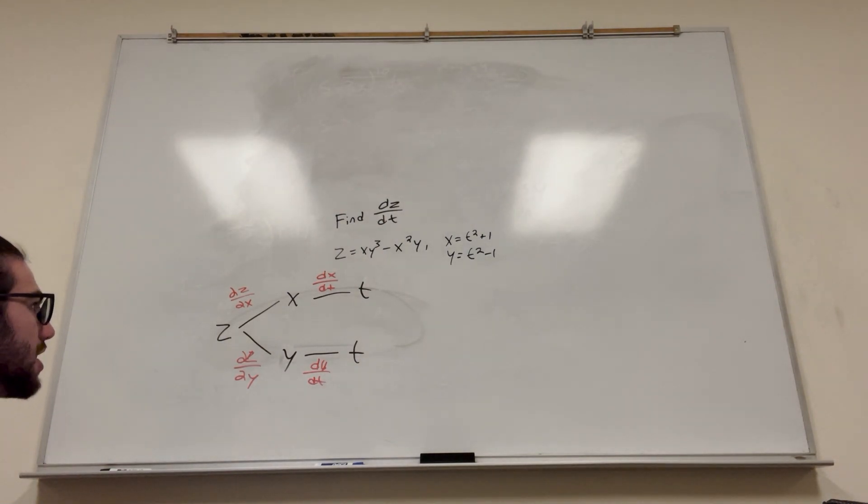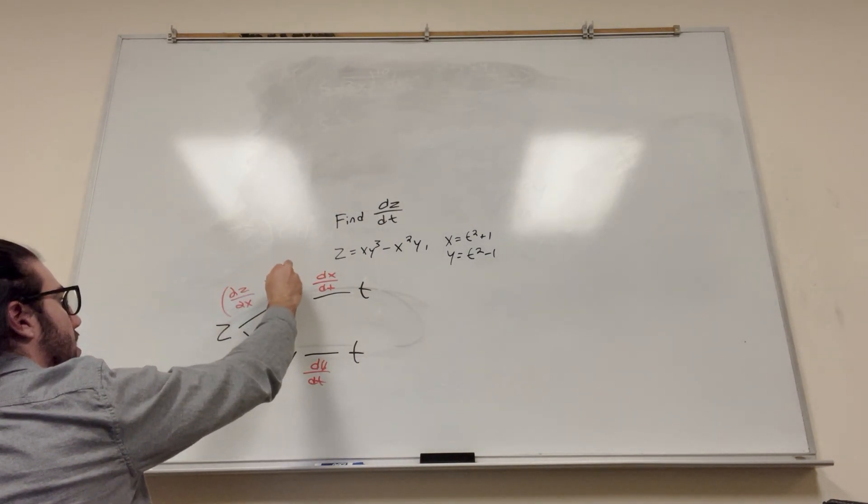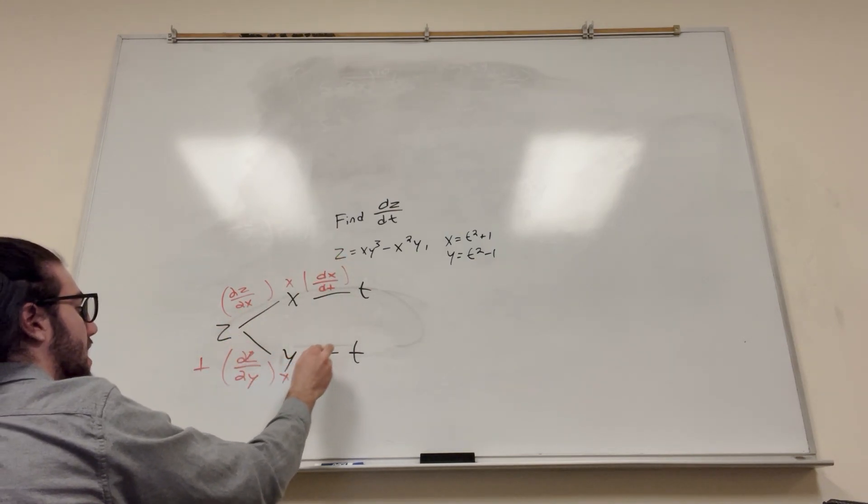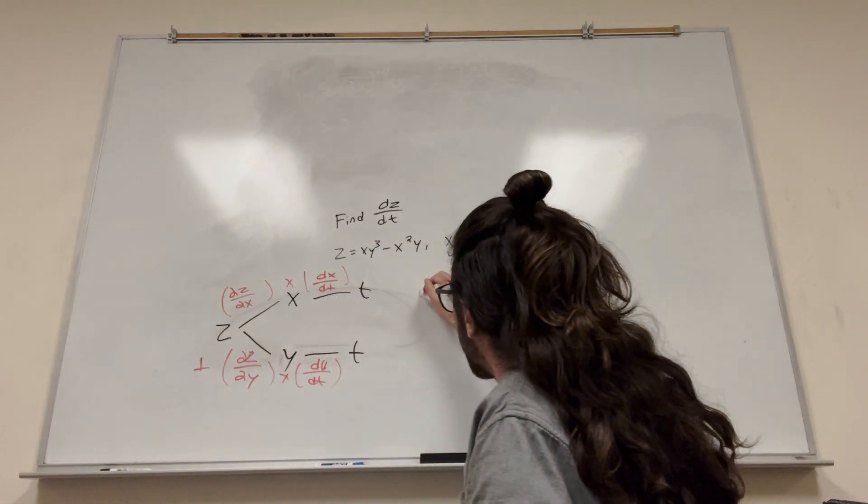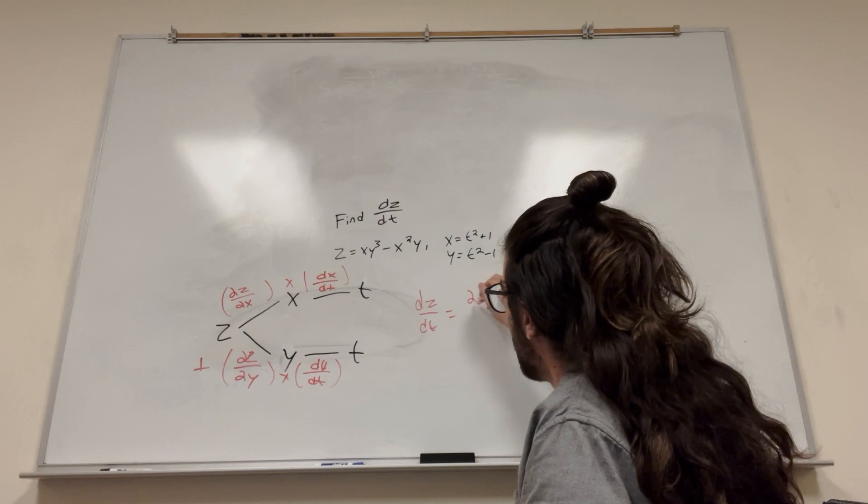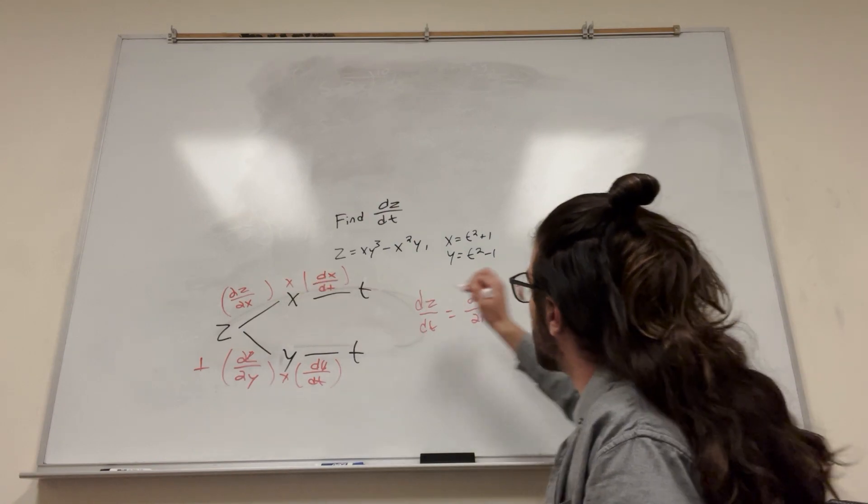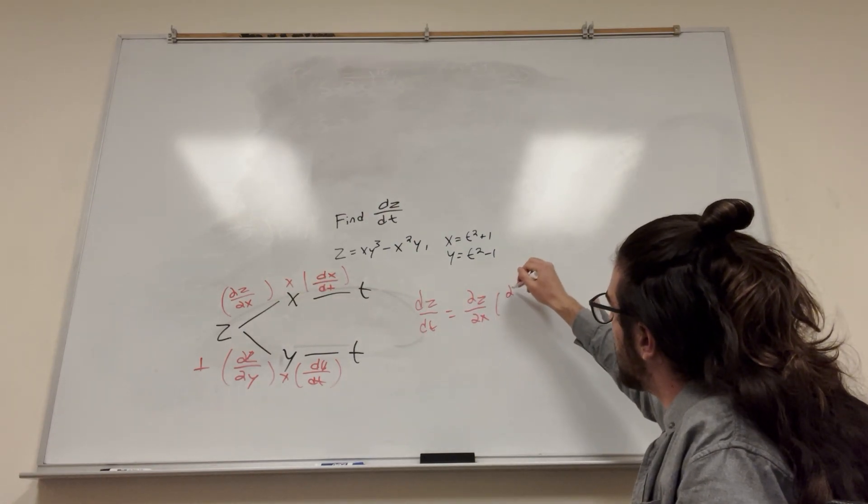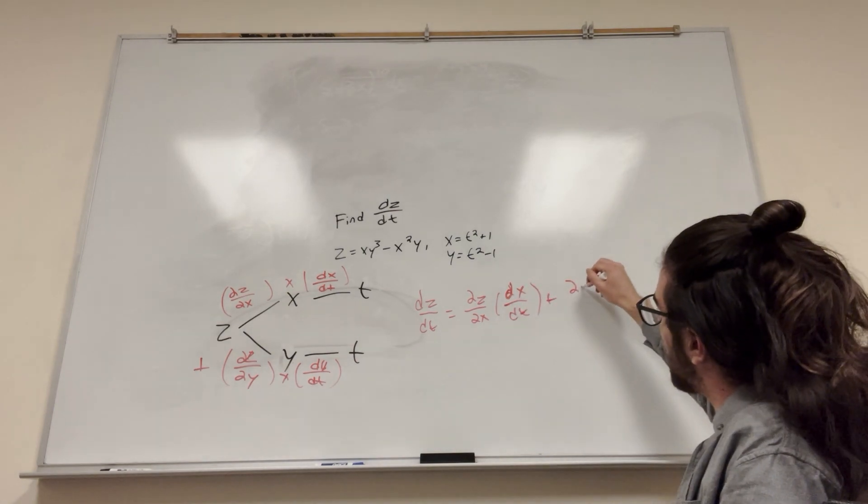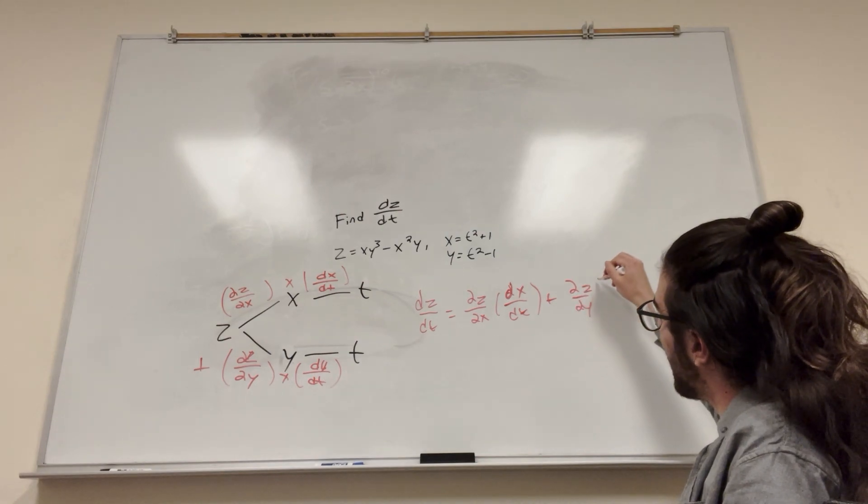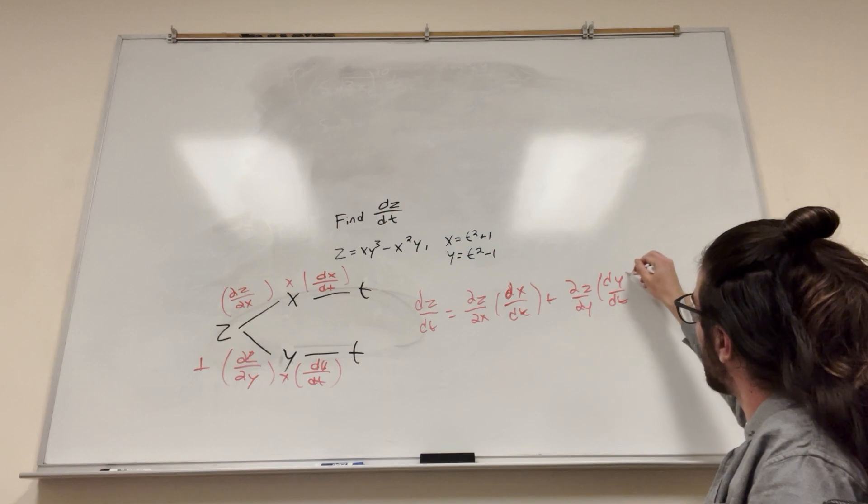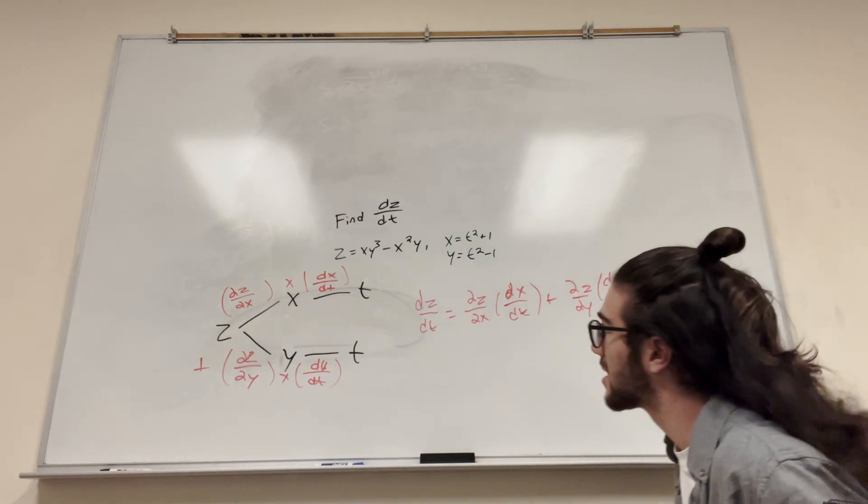So now to do this, what you're going to do is you're going to multiply this by this, and then you're going to add it to this times this. So it's going to look something like this. The derivative of z with respect to t is going to be del z del x times dx dt plus del z del y times dy dt. Alright? Now that's our function. So what do we need to do? Well, we just have to take some derivatives, right? Let's set it up.